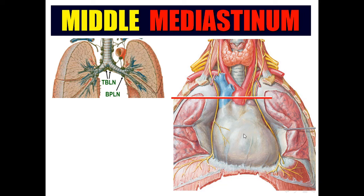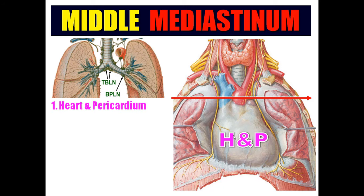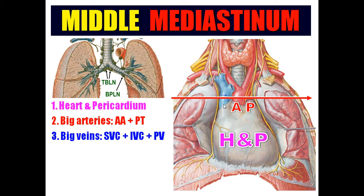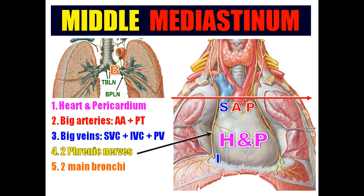The middle mediastinum contains the heart and the pericardium. It contains two big arteries: ascending aorta and the pulmonary trunk. And three veins: lower part of the superior vena cava, upper part of the inferior vena cava, and four pulmonary veins behind the heart entering the left atrium. Also two phrenic nerves, two main bronchi, bronchopulmonary lymph nodes at the hilum of the lung, and tracheobronchial lymph nodes.